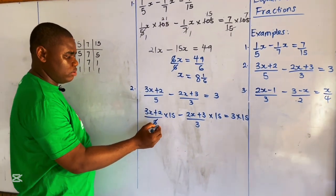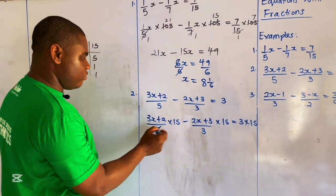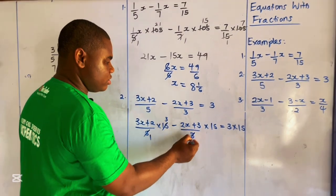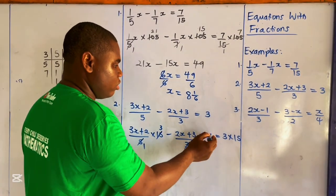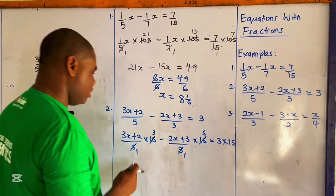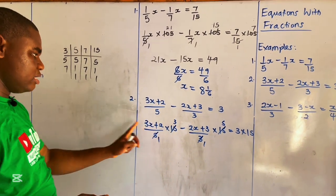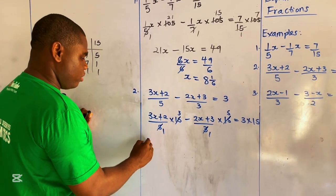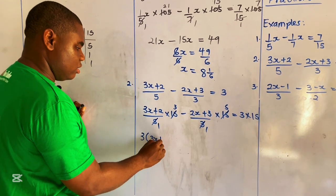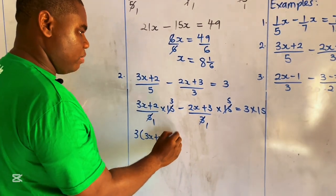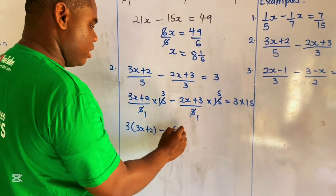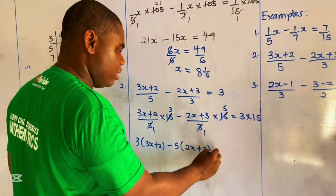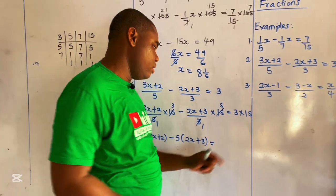Simplifying: 5 goes into 15 three times, and 3 goes into 15 five times. So we get 3 in brackets (3x plus 2), minus 5 in brackets (2x plus 3), equals 3 times 15, which gives 45.